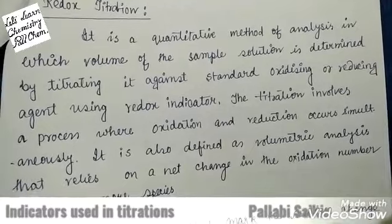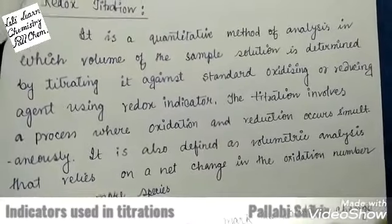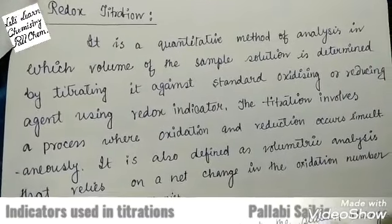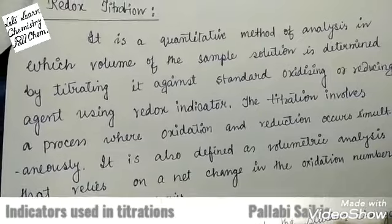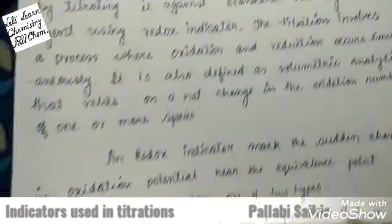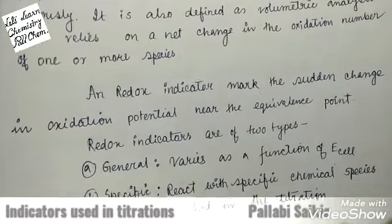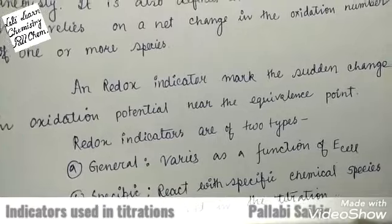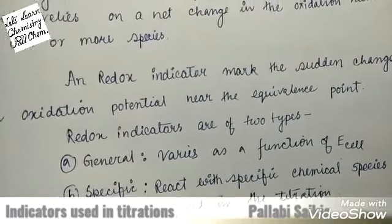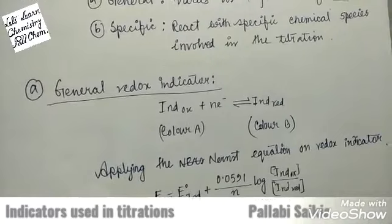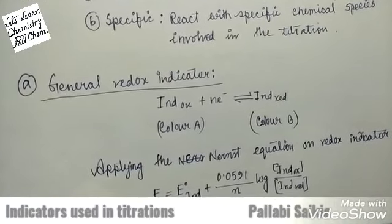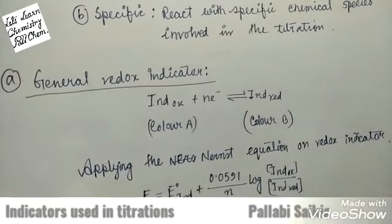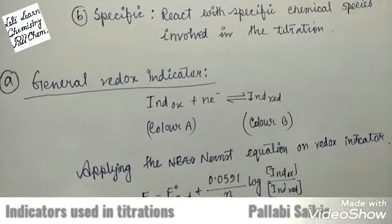Next is redox titration. Redox titration involves both oxidation and reduction reactions. The indicator marks a sudden change in oxidation potential near the equivalence point. Two types of redox indicators are used: one is the general indicator that varies as a function of the potential of the cell, and the specific indicator that reacts to a specific chemical species involved in the titration.